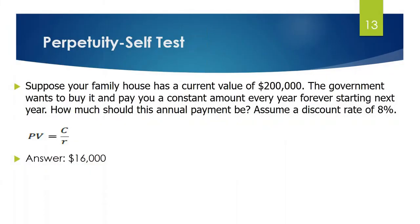Now let's look at another example. Suppose the current value of your family house is $200,000 and the discount rate is 10%. The question is: how much should be your annual payment — that is, how much should the government pay you each year? You can use the perpetuity formula, where PV equals C divided by R.